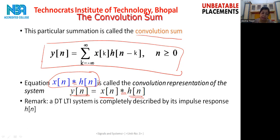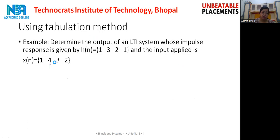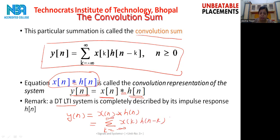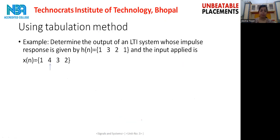So a discrete time LTI system is completely described by its impulse response hn. If we want to find the output of any system, it equals the convolution of the input with the impulse response: yn = Σ xk·h(n−k) for k equals minus infinity to infinity. There are a number of methods for finding the convolution, and we will start with the first method known as the tabulation method.